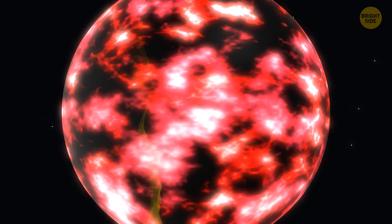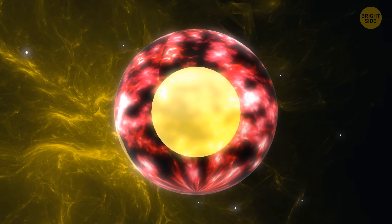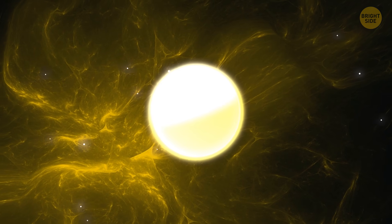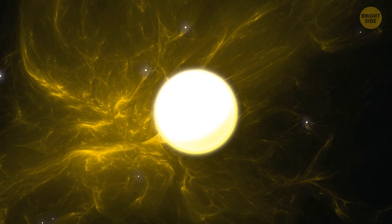After the red giant phase, the sun will shrink a bit. Its outer layers will fade away into space, leaving behind a beautiful planetary nebula. It'll be revealing its glowing core.